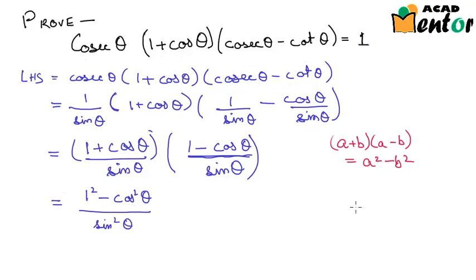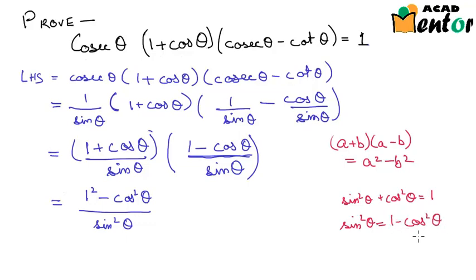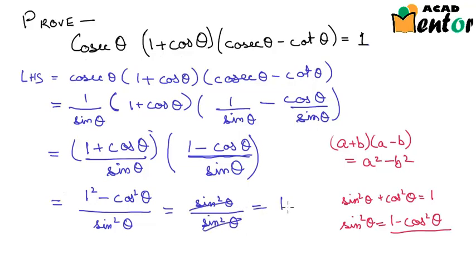We know that sin²θ + cos²θ = 1, which means sin²θ = 1 - cos²θ. So we replace 1 - cos²θ in the numerator with sin²θ. The numerator becomes sin²θ and the denominator is also sin²θ — these cancel out and we are left with 1, which equals the right hand side. Hence, this has been proven.